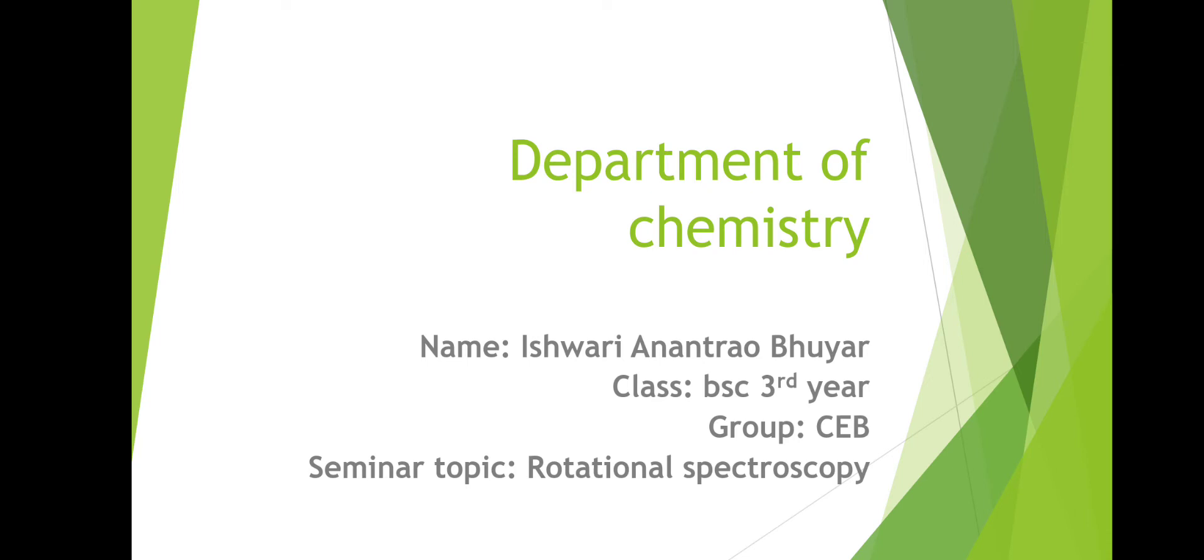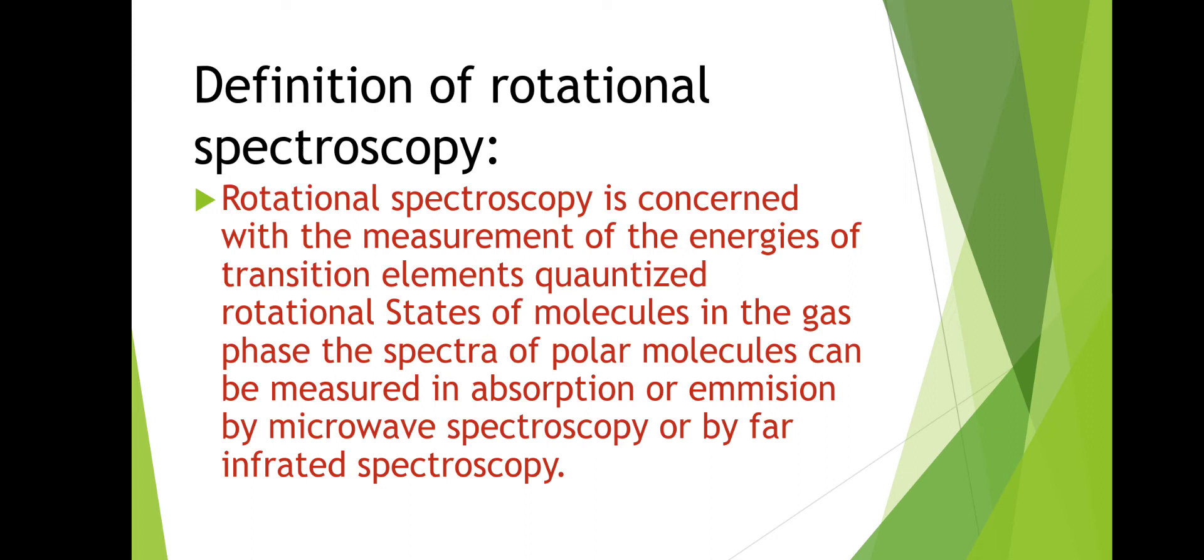Definition of rotational spectroscopy: Rotational spectroscopy is concerned with the measurement of the energies of transitions between quantized rotational states of molecules in the gas phase. The spectra of polar molecules can be measured in absorption or emission by microwave spectroscopy or by far-infrared spectroscopy.